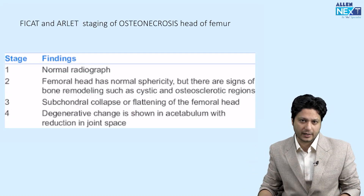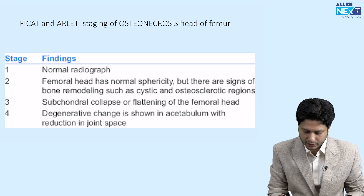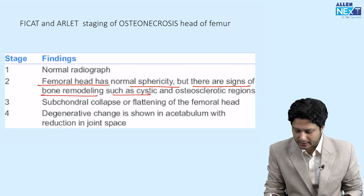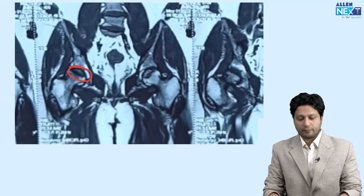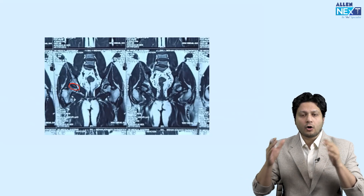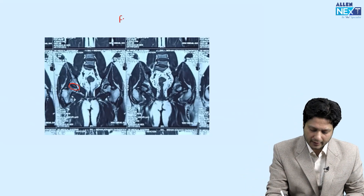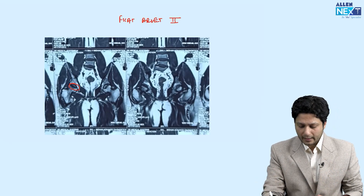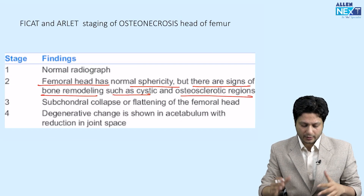We went for MRI, and in the MRI we found sclerotic and avascular changes in the articular weight-bearing surface of the head of the femur. According to the Ficat-Arlet system of classification, it was found to be Stage 2, where the femoral head has normal sphericity but there are signs of bone remodeling such as cystic and osteosclerotic regions, clearly observed on imaging. We concluded the patient is suffering from osteonecrosis of the femoral head, Ficat-Arlet type 2a, due to no loss of sphericity.